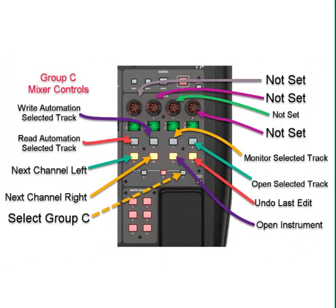In Group C, when you push the Set C button, these are the controls for it. The top four rotary knobs are not assigned yet — you can assign those if you find a need for them. But we are using the eight buttons in Group C.